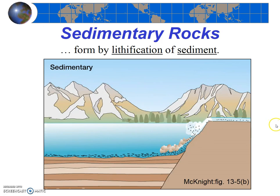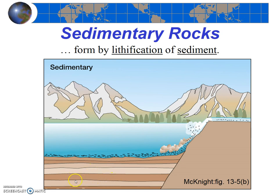Looking at this diagram, you can also imagine what's happening in our very own San Francisco Bay, or out in the ocean beyond the Golden Gate. Water from rivers like the Sacramento River enters the bay and slows down. The water at a slower velocity can't hold as much material. The fine particles like muds and clays settle to the bottom and over time get compacted until eventually that compacted mud turns into a sedimentary rock called shale.